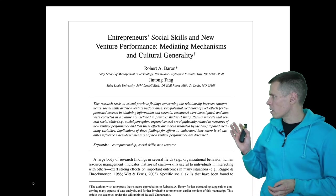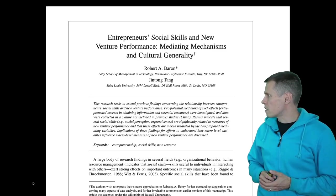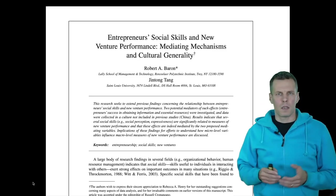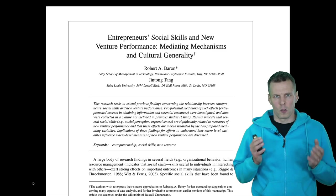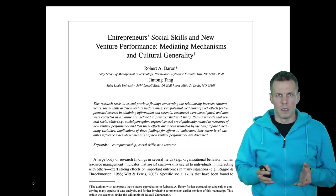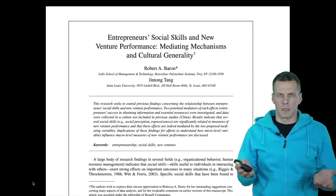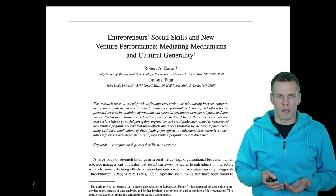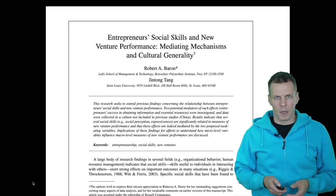The example article is written by Barron and Thang. It's titled 'Entrepreneurs' Social Skills and New Venture Performance: Mediating Mechanism and Cultural Generality.' The study is published in the Journal of Management, which is one of the top journals in the field of management. The topic belongs to entrepreneurship, but this is a general journal, so they publish pretty much anything related to management, as long as it's of high quality.